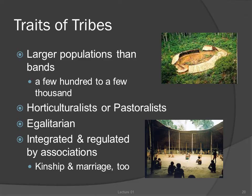Whereas intermarriage and kinship tend to be sufficient for bands, tribes must use those methods and also add in other sorts of groups — like religious societies or war parties — that join non-kin together. The politics of tribes are rather variable; in many ways, tribe is another catch-all term for egalitarian societies that aren't bands.